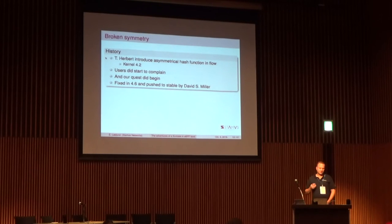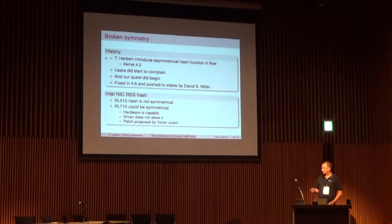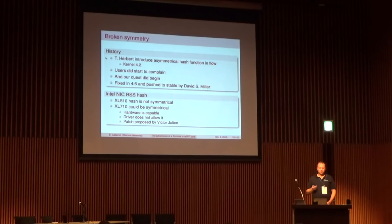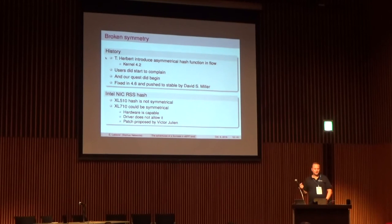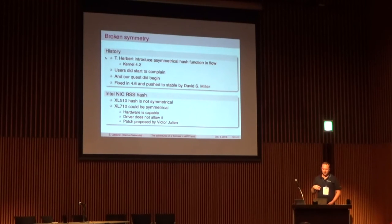This raised our interest in being able to do load balancing in user space using, for example, AF_PACKET cluster eBPF. Another unsatisfactory point is that Intel NIC RSS hash is not currently symmetrical. For older models like the XL710 or i40e, you can't have a symmetric hash so you can't use RSS accurately. For the newest model, the 40GbE, the hardware is capable of doing it but the driver doesn't provide the feature — there is a patch from Victor Julien that needs to be reworked into the driver.